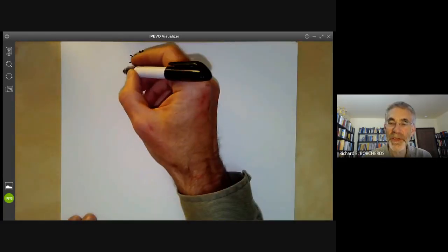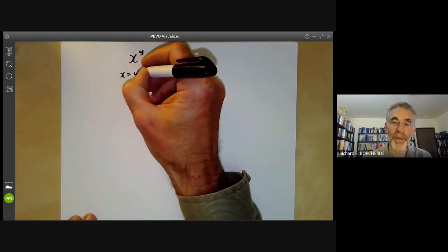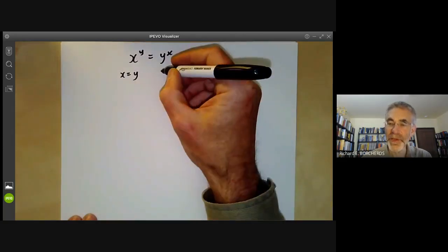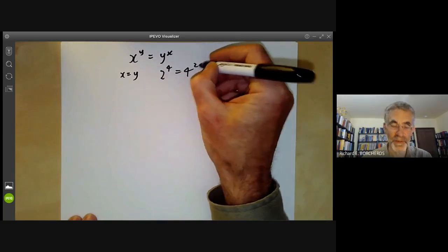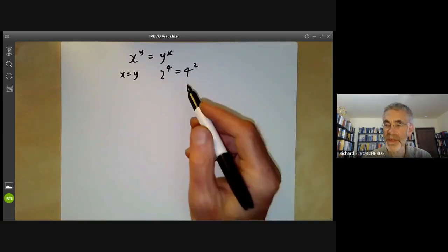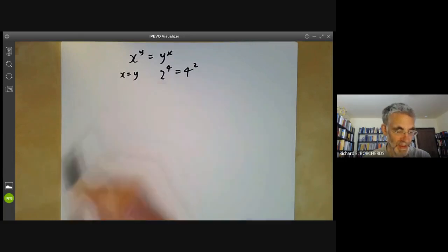Well, there are some obvious solutions. We can just take x equals y. There's another solution, two to the power of four is equal to four to the power of two. So that gives us an extra two points and a line.